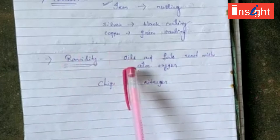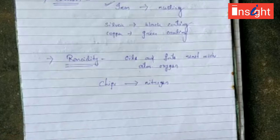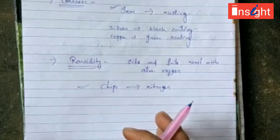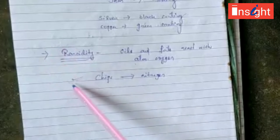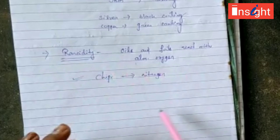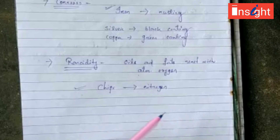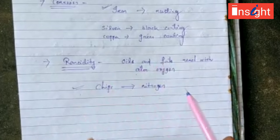Rancidity occurs when oils and fats come in contact with atmospheric oxygen — they get oxidized and become rancid, giving a bad smell and taste. Food items containing oil and fats are kept in airtight containers to prevent oxidation, or antioxidants are added. Packet food items such as chips are flushed with nitrogen gas to prevent oxidation. This concludes the effects of oxidation reactions; next we will study acidic and basic reactions.